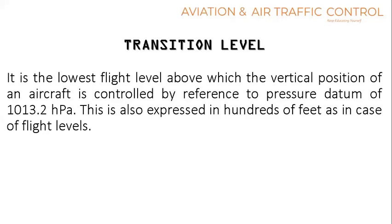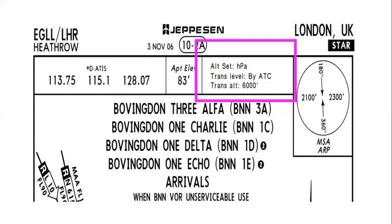Transition level is the lowest flight level above which the vertical position of an aircraft is controlled by reference to a pressure datum of 1013.2 hectopascal. This is also expressed in hundreds of feet, as in the case of flight levels. Here the concern is not obstacles, as we are flying quite high, but all aircraft should have a common reference such as 1013 for the purpose of separation with all en-route aircraft. Transition altitudes are published in approach charts, SIDs and STARs, and transition level is provided by air traffic control.